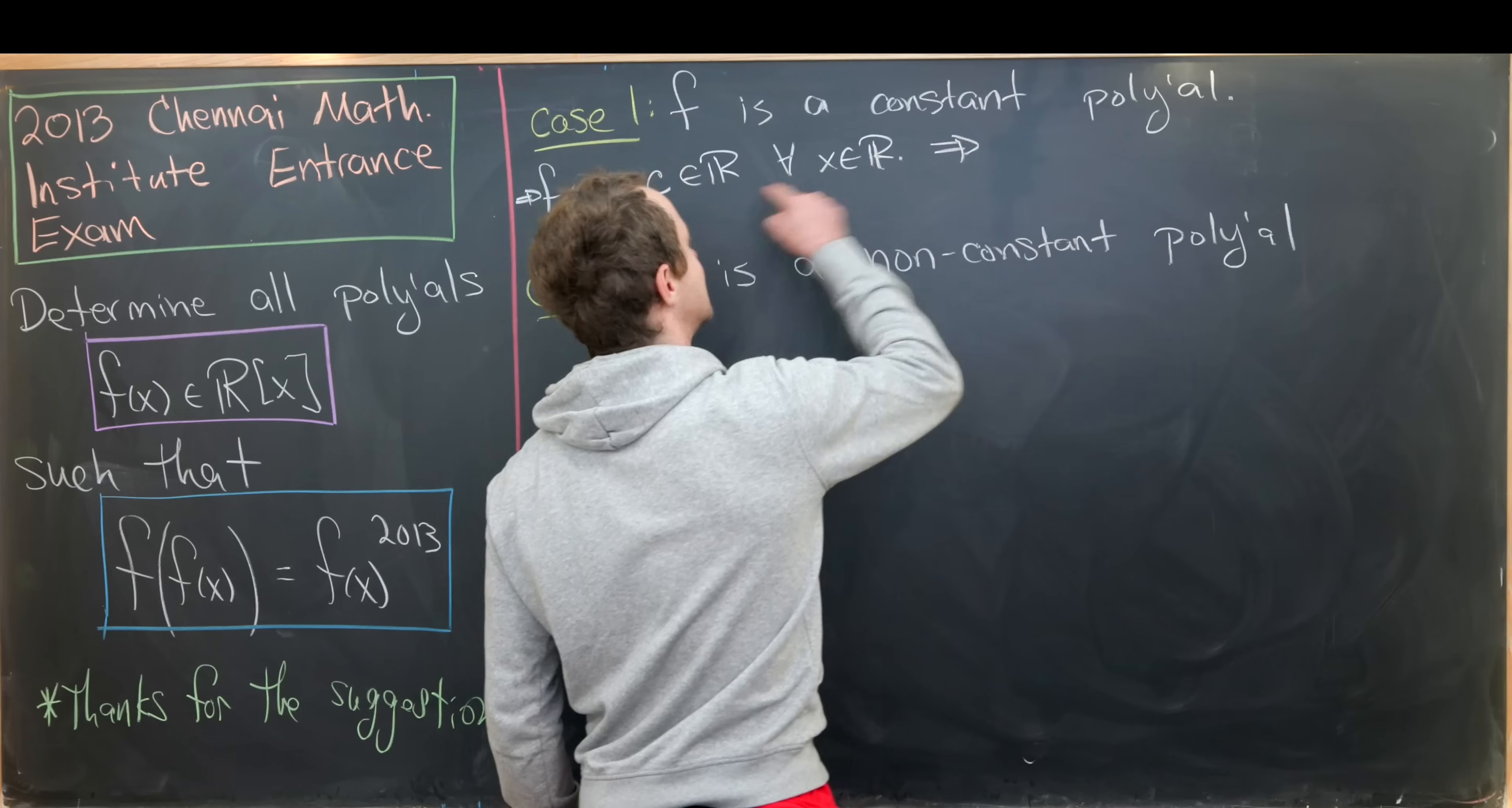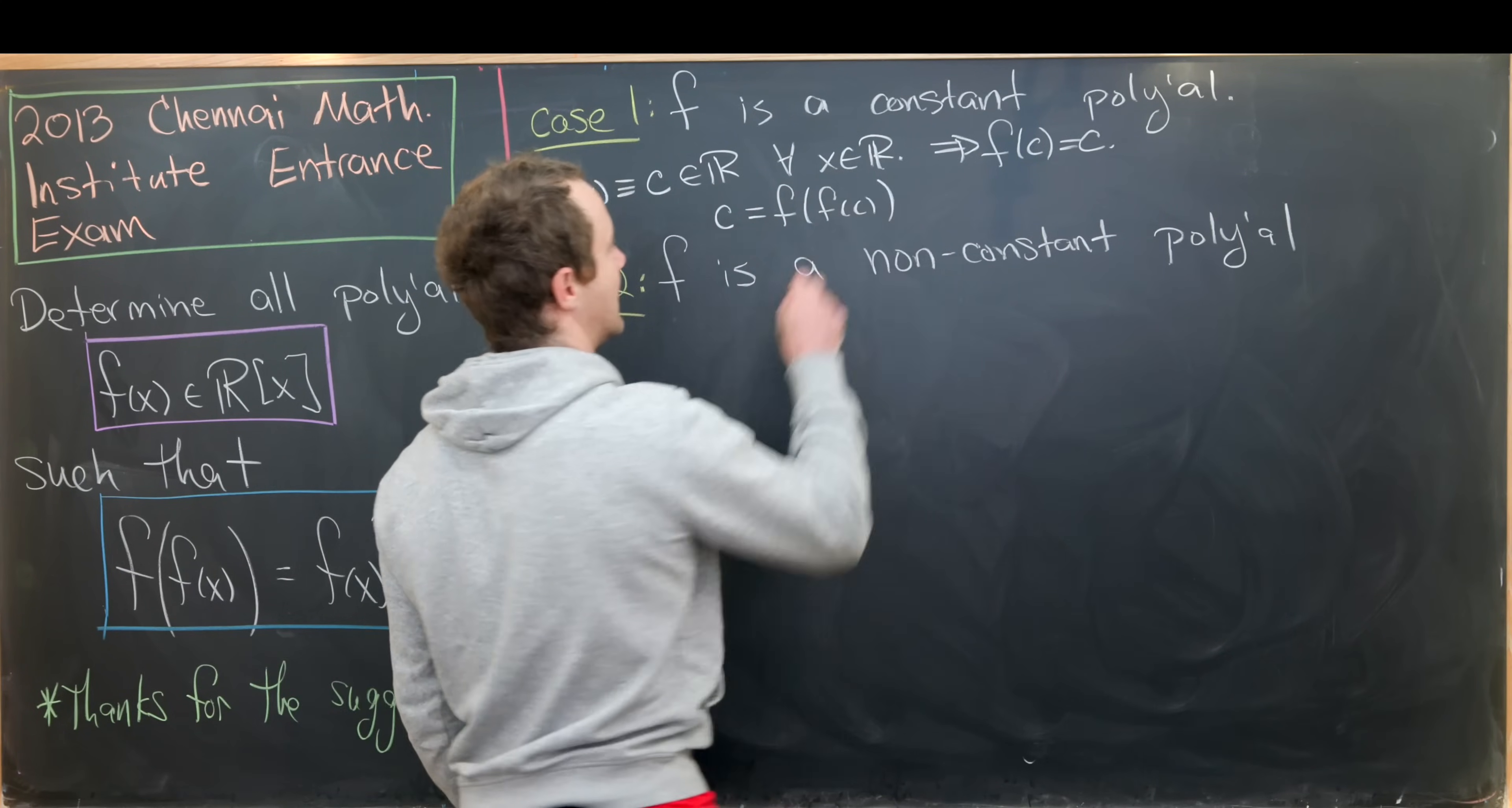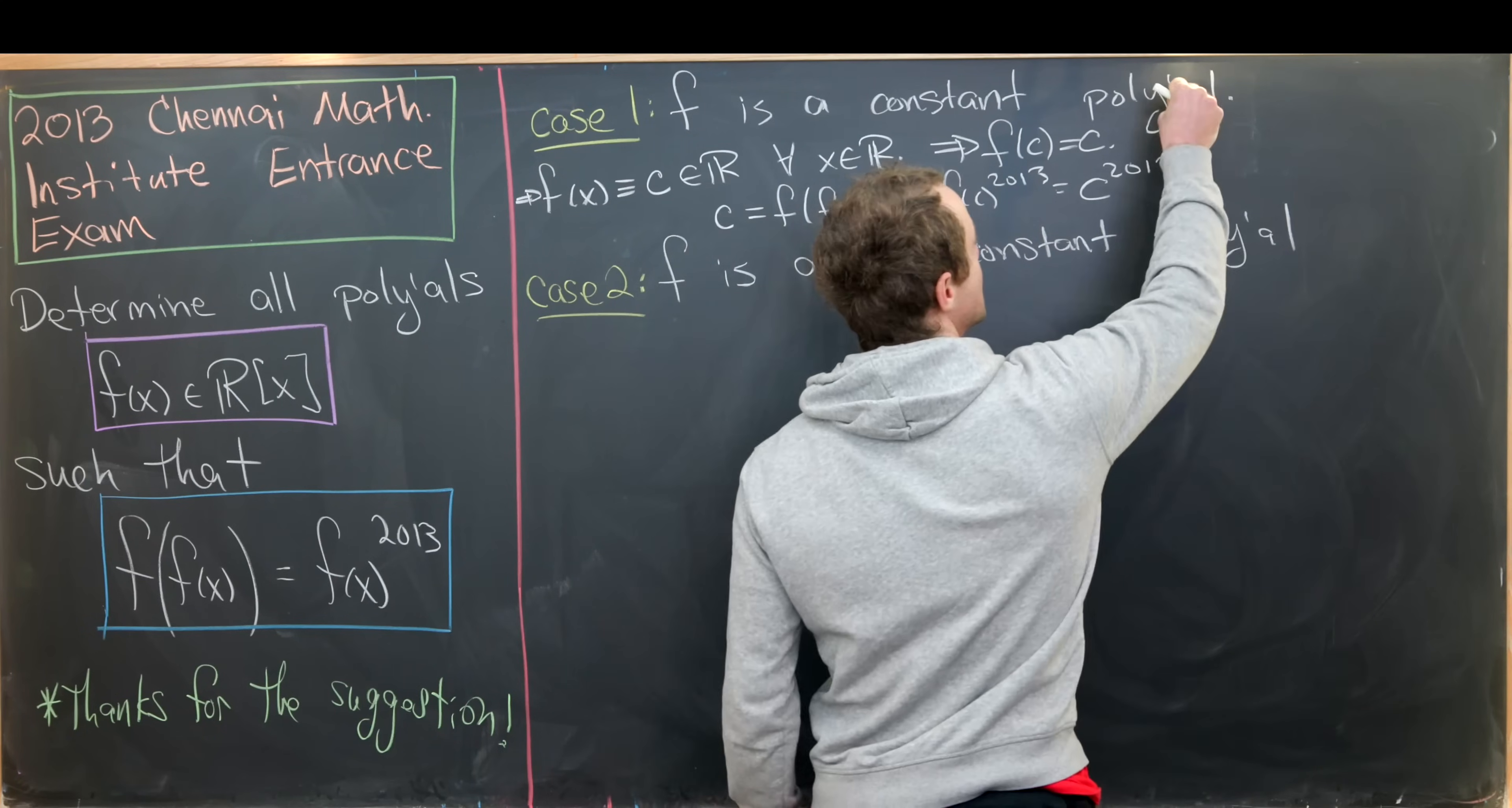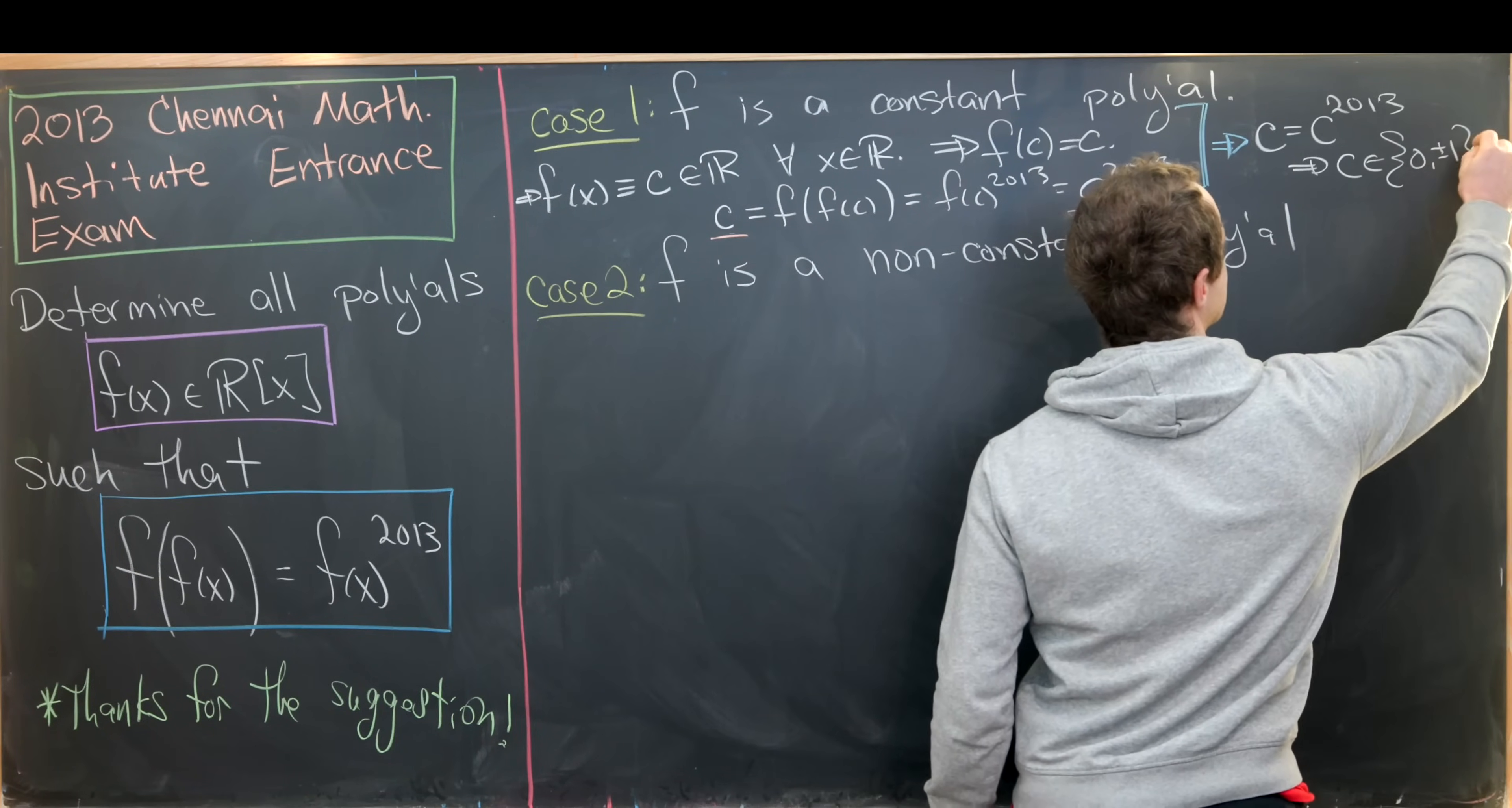Now we can just set x equal to c and we'll see that we get f evaluated at c is c. Now we can start using our functional equation. We have c is the same thing as f evaluated at f of c. Again, because it's a constant polynomial, that's going to be the same thing as f of c to the 2013, but that's c to the 2013. Putting all of this calculation together we see that we have formed the equation c equals c to the 2013, which means c must come from the set zero plus minus one.